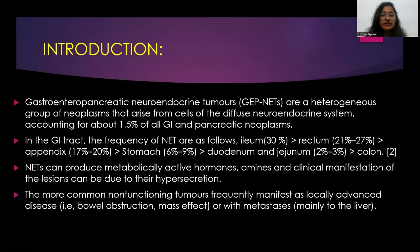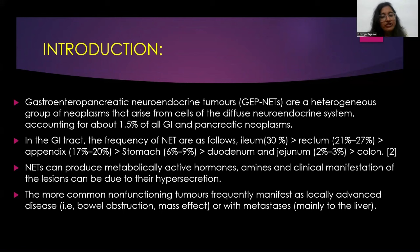The gastroenteropancreatic neuroendocrine tumours are a heterogeneous group of neoplasms that arise from cells of the diffuse neuroendocrine system, and these account for about 1.5% of all GI and pancreatic neoplasms. In the GI tract, the ileum is the most common site and the colon is the least common site. They can produce metabolically active hormones and amines, and clinical manifestations can be due to their hypersecretion. Non-functioning tumours frequently manifest as locally advanced disease like bowel obstruction, mass effect, or metastasis, especially to the liver.